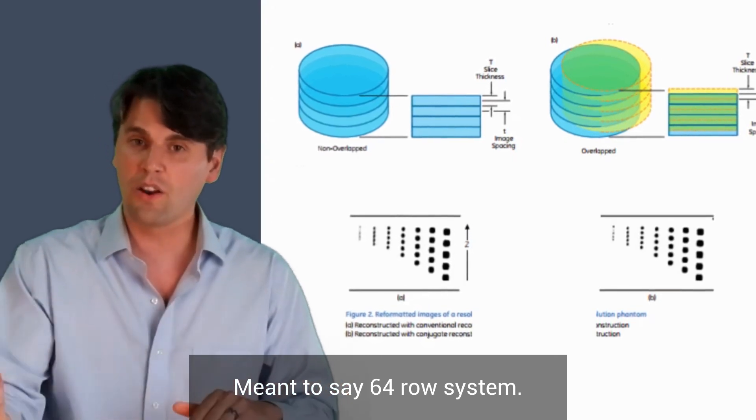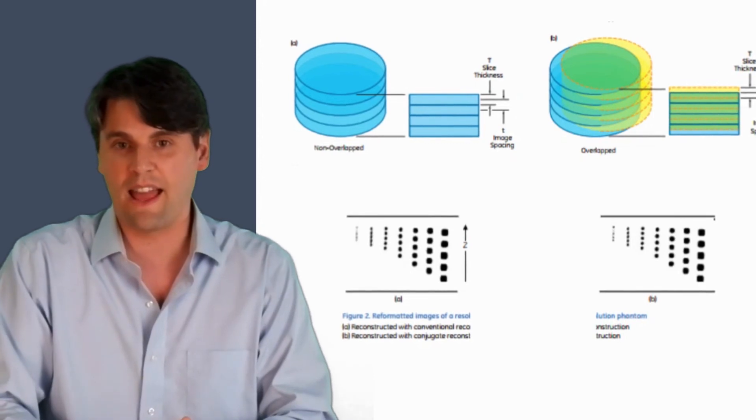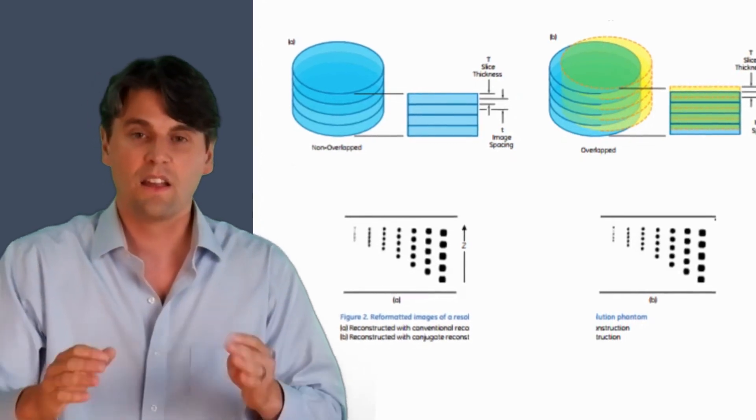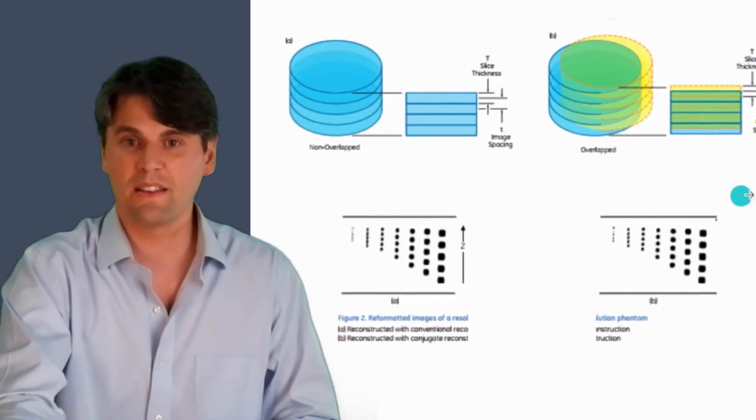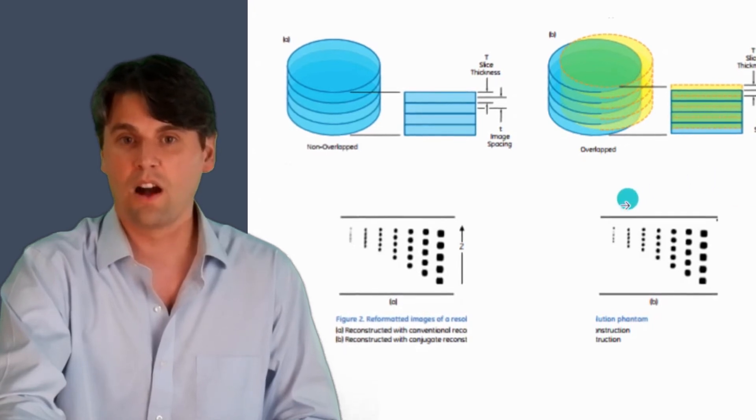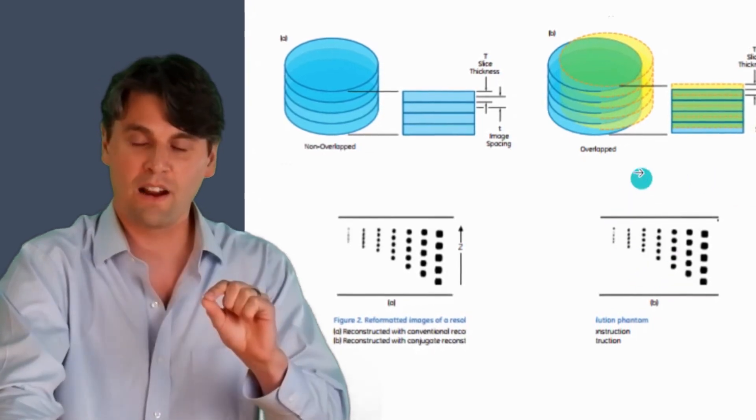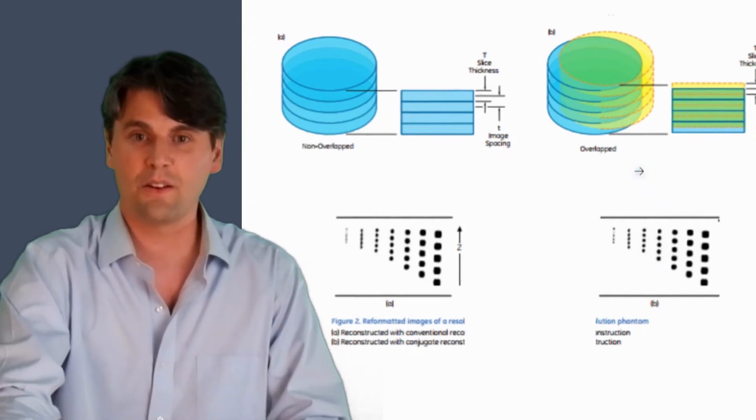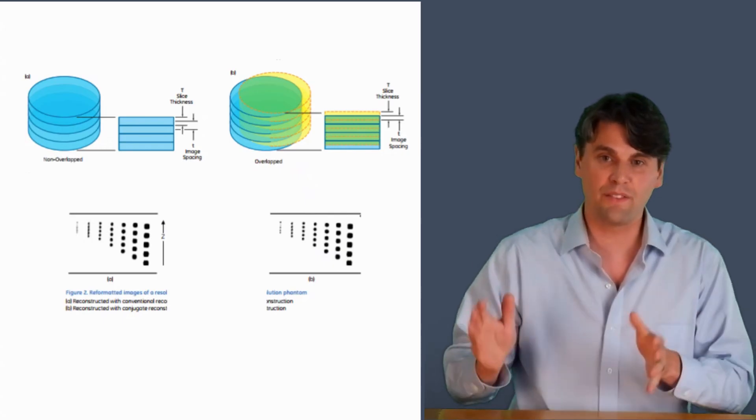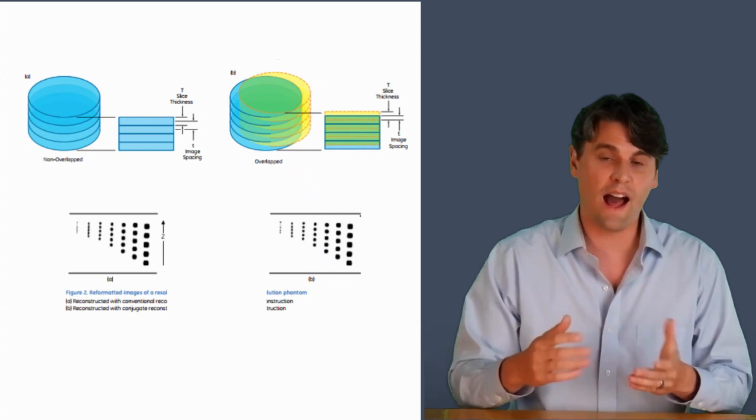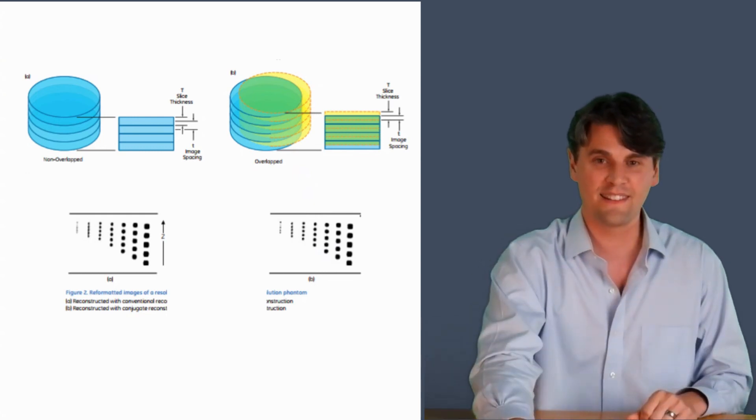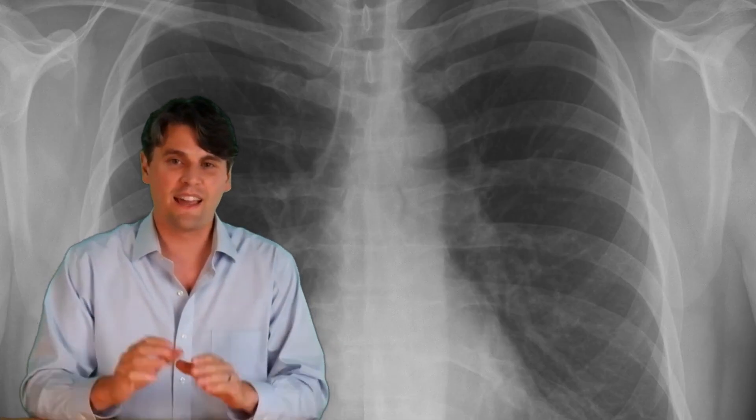So in that way, if you had a 64-slice system, then you would make 128 slices as you went around in an axial acquisition. And then you can see the improvement in the reconstruction of the different air regions inside of this phantom. You'll see improvements if you use focal spot deflection in the z-direction.